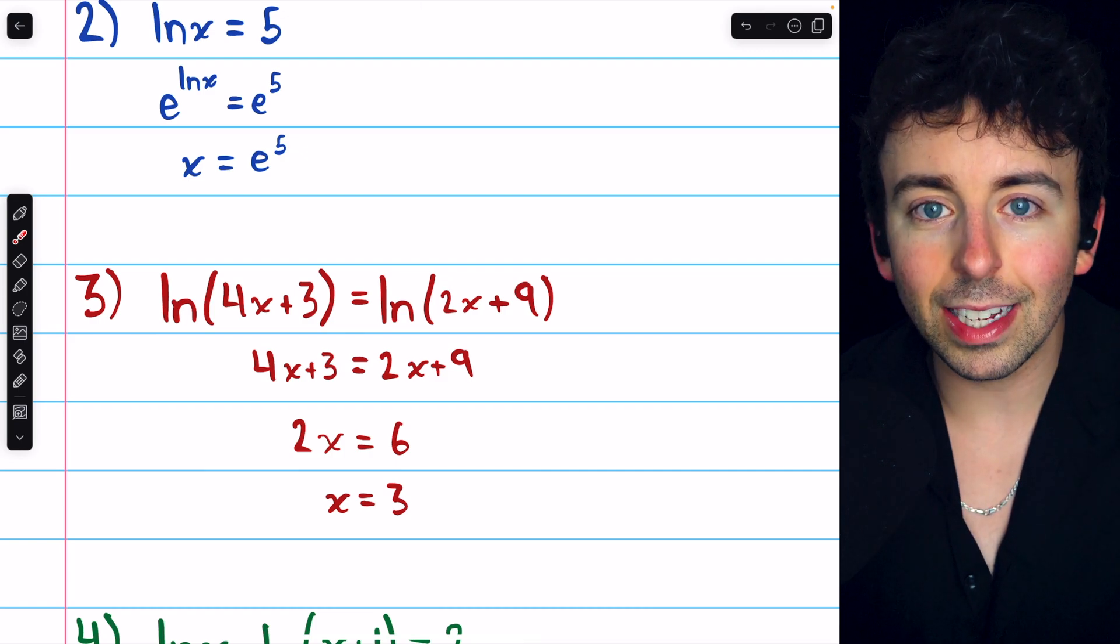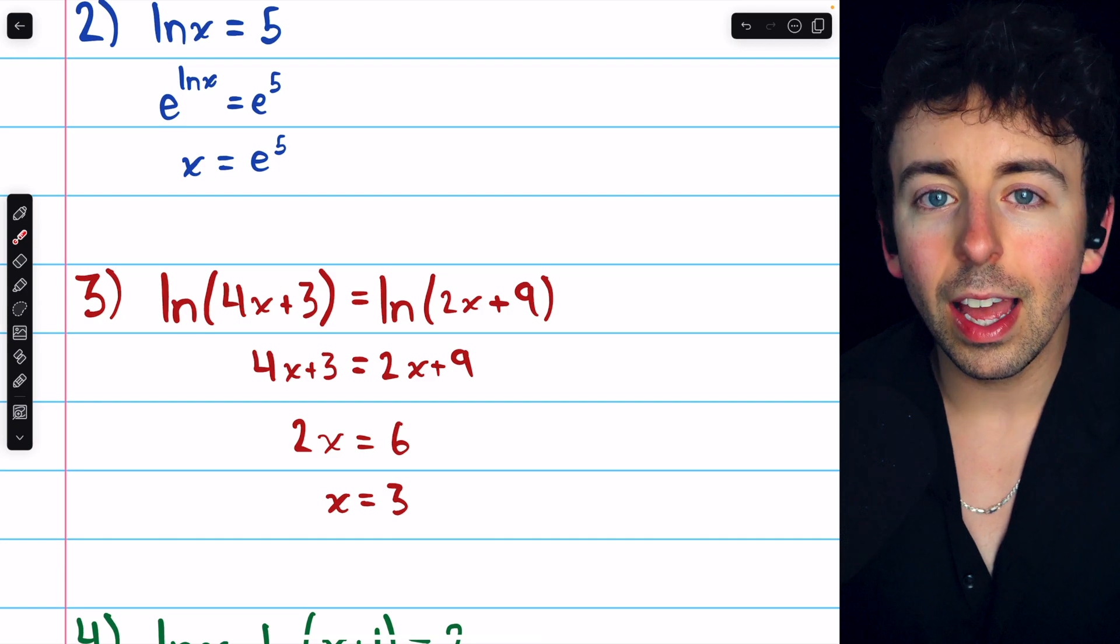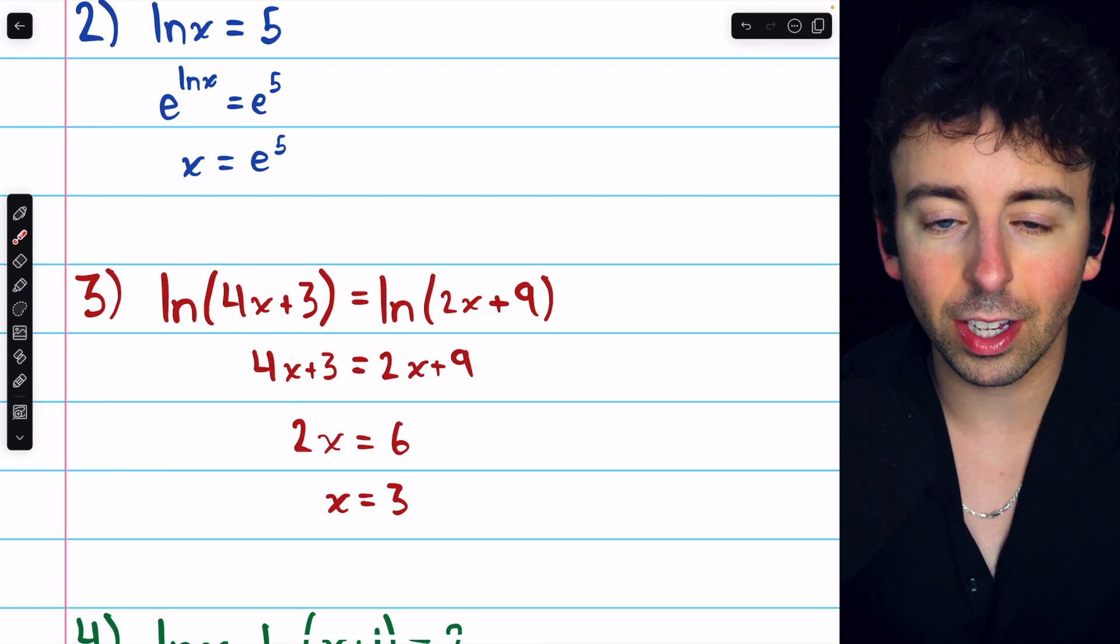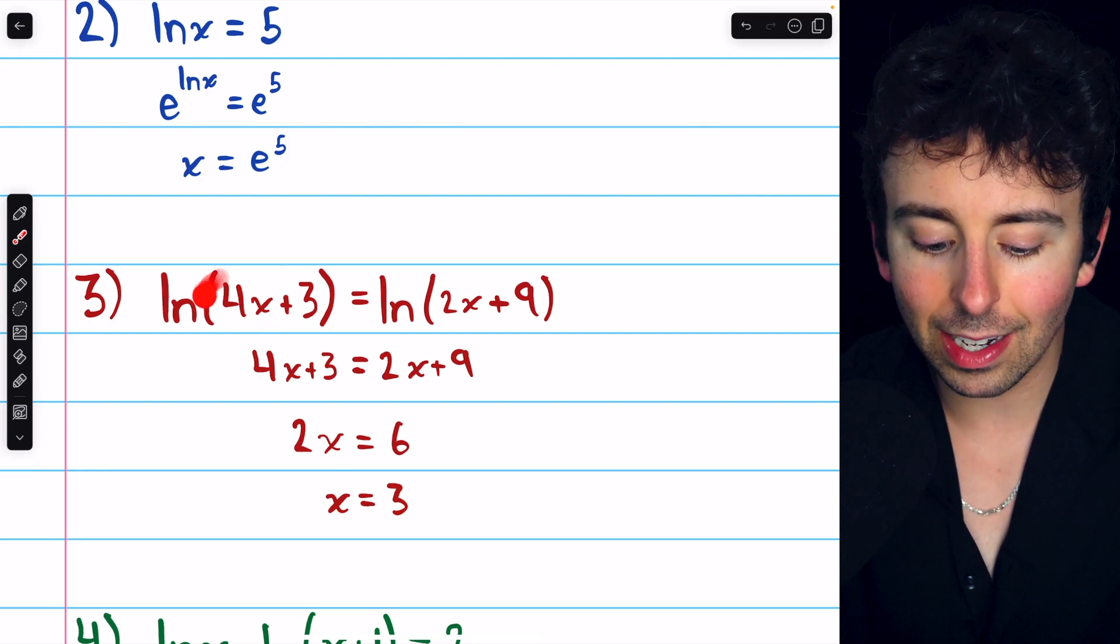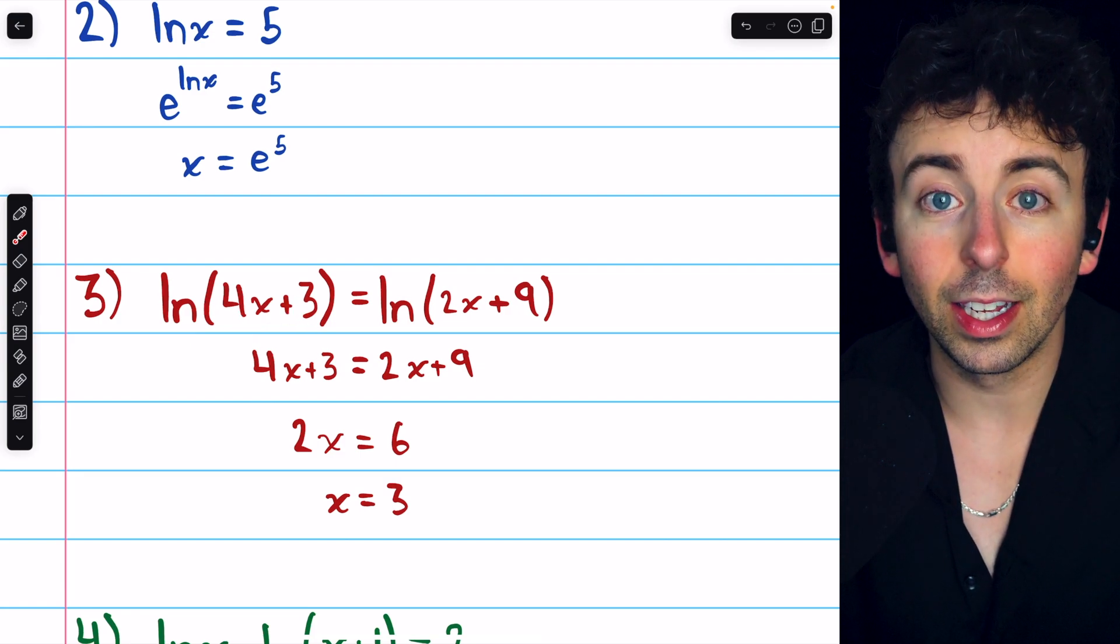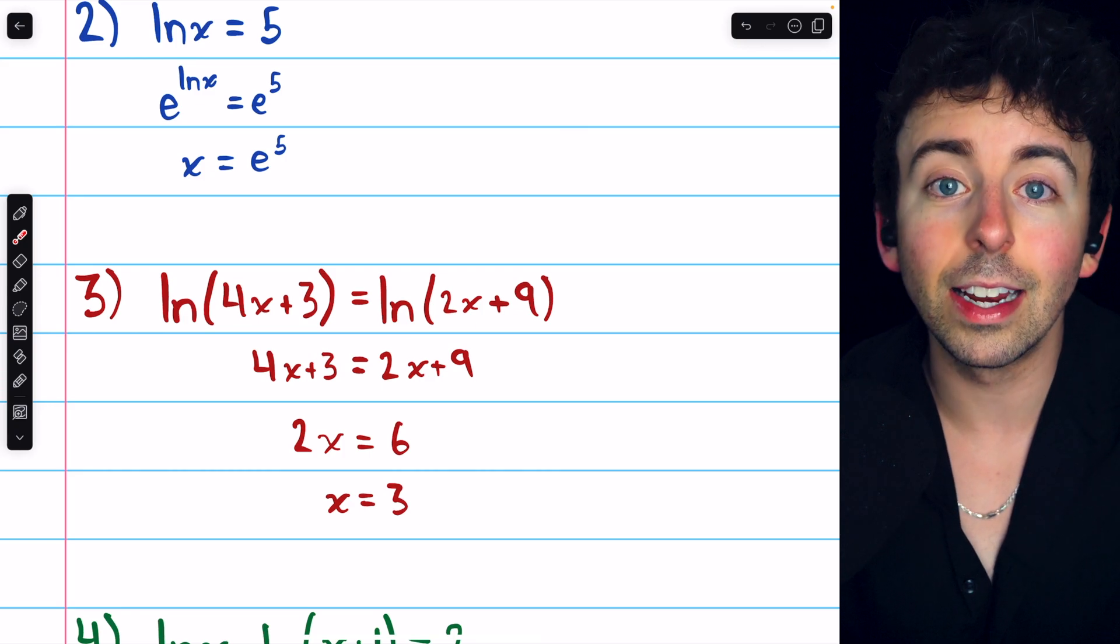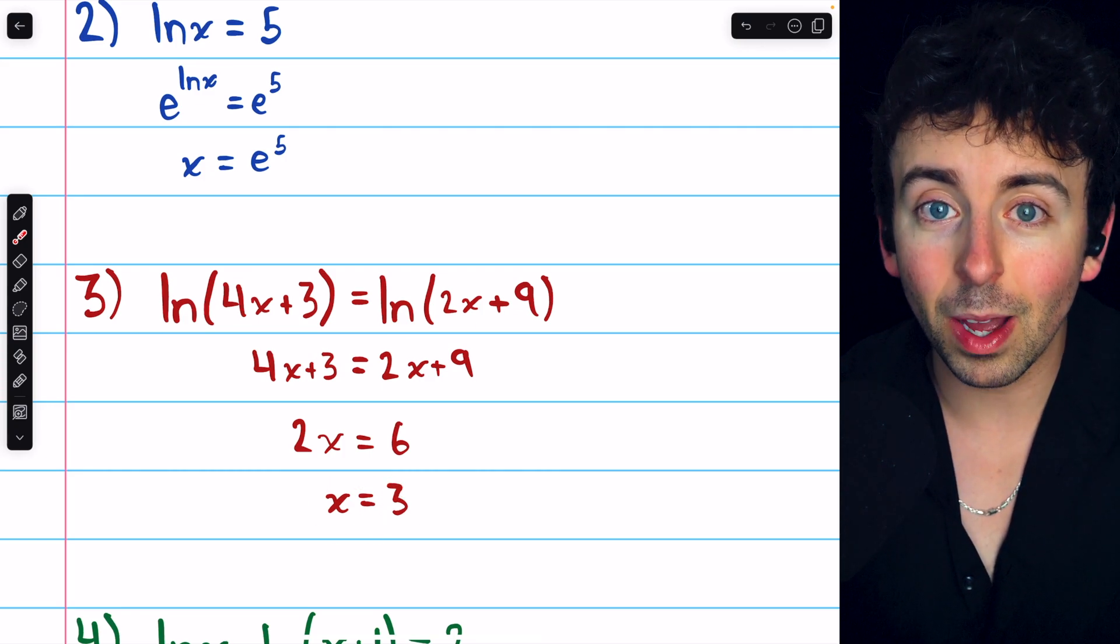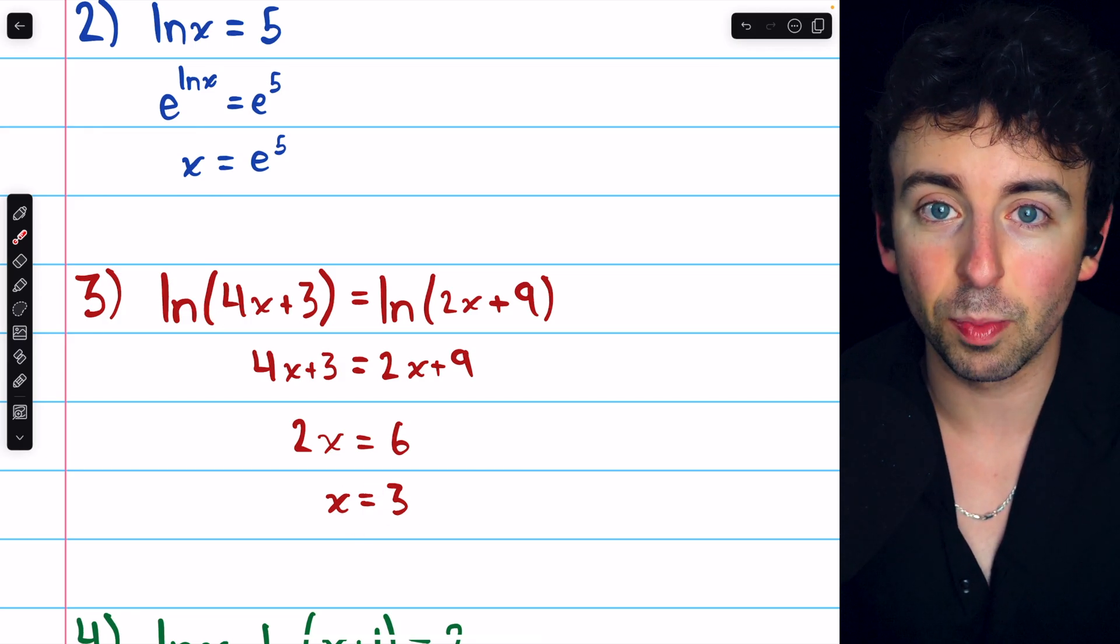One thing we need to keep in mind is that our solution, in order to actually be a solution, it has to be in the domain of the original expressions. For example, x equals 3 we can plug into this natural log function. The natural log of 12 plus 3 exists. Similarly, the natural log of 6 plus 9 exists. So this is a valid solution. But keep that in mind, checking the solution is in the domain for this next problem.